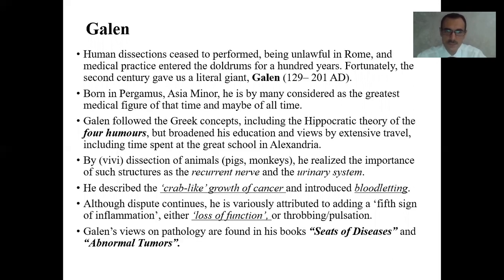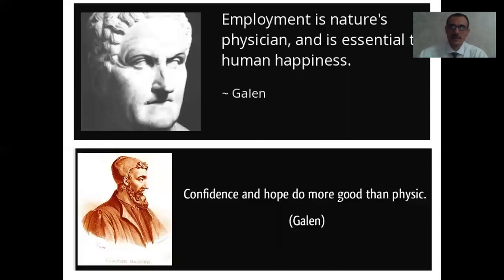Galen is variously attributed with adding the fifth sign of inflammation — either loss of function or troubling pulsation. Galen's views of pathology are found in his books 'Seeds of Disease' and 'Abnormal Tumors.' Some popular Galen aphorisms include: 'Employment is nature's physician and is essential to human happiness,' and 'Confidence and hope do more good than physic.'